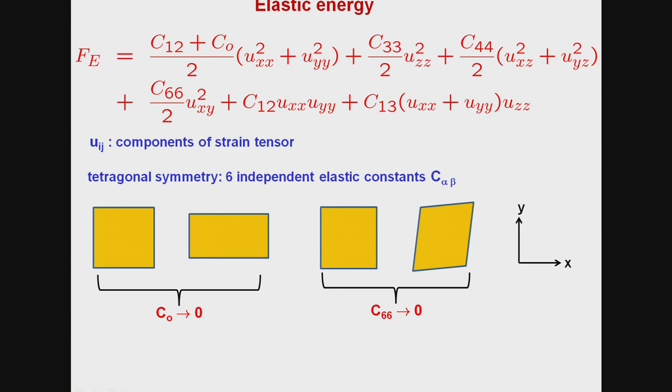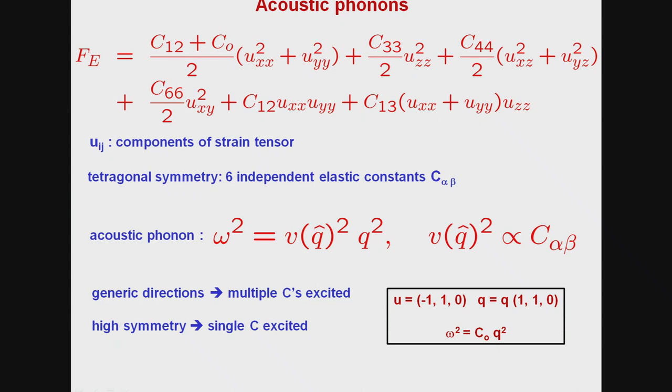The next thing to keep in mind is that the same free energy actually describes the fluctuations of this elastic medium, which are the acoustic phonons. So, we know that the acoustic phonon frequency must be linear in its wave vector, and the velocity is a square root of the elastic constant. But the very important point to keep in mind is that when a phonon is excited along generic directions, or its polarization is along generic directions, then the excitation of such a phonon implies multiple elastic constants being excited, or multiple strains being excited.